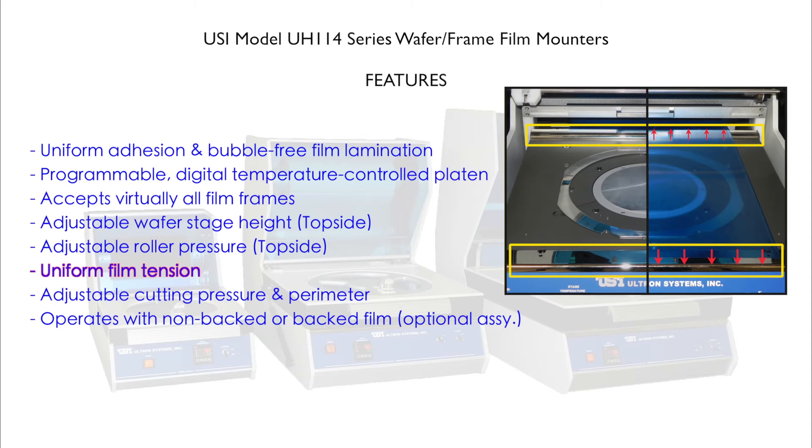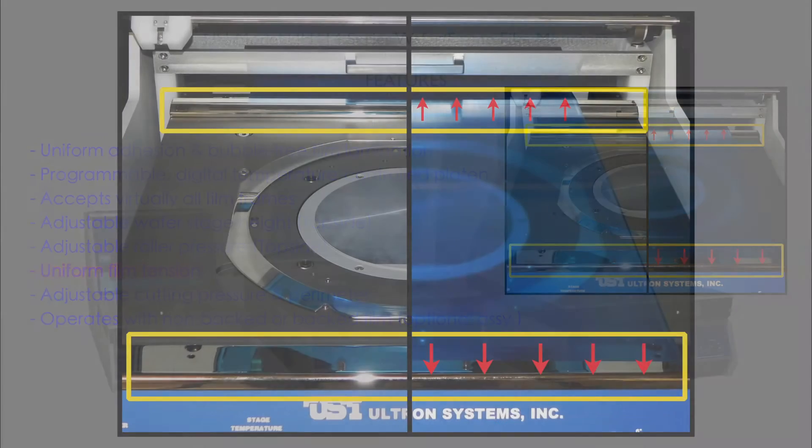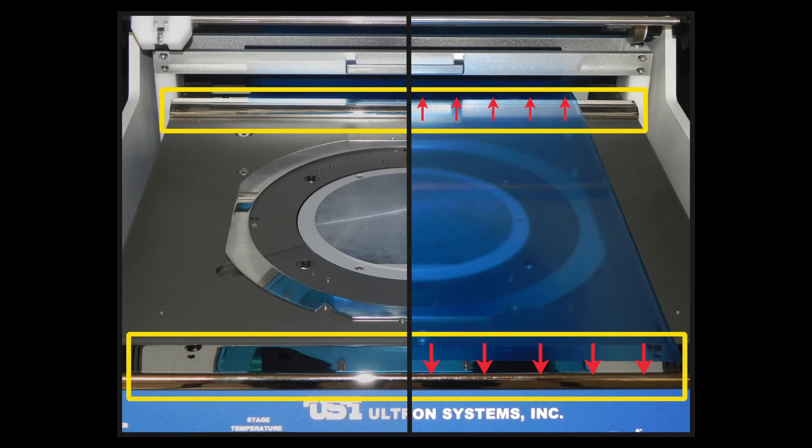Uniform film tension. Film tension is uniformly maintained by film tensioner bars, aiding in bubble-free lamination.